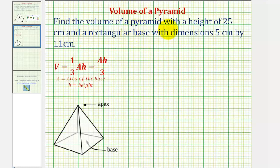We want to find the volume of a pyramid with a height of 25 centimeters and a rectangular base with dimensions 5 centimeters by 11 centimeters.